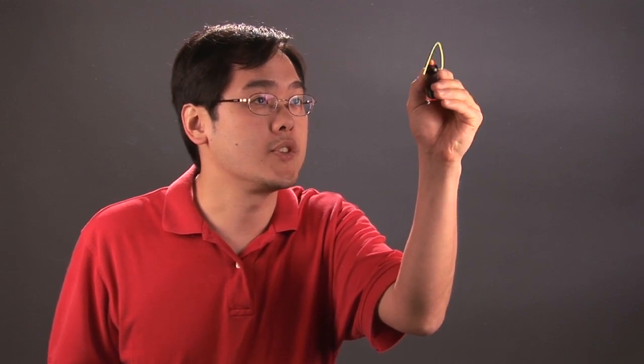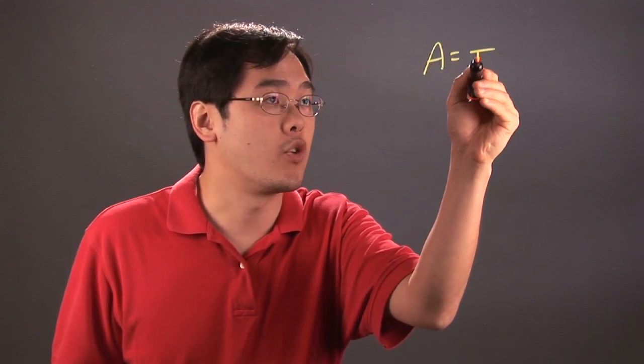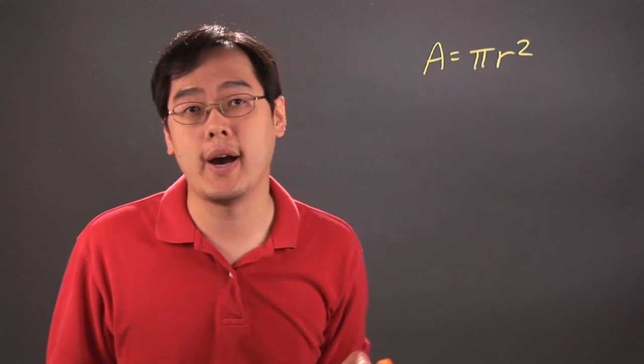Now it really depends on what the shaded part of the fraction actually represents, because sometimes different shading will give you different regions. But it all starts with the area of a circle formula, which is area equals pi r squared.